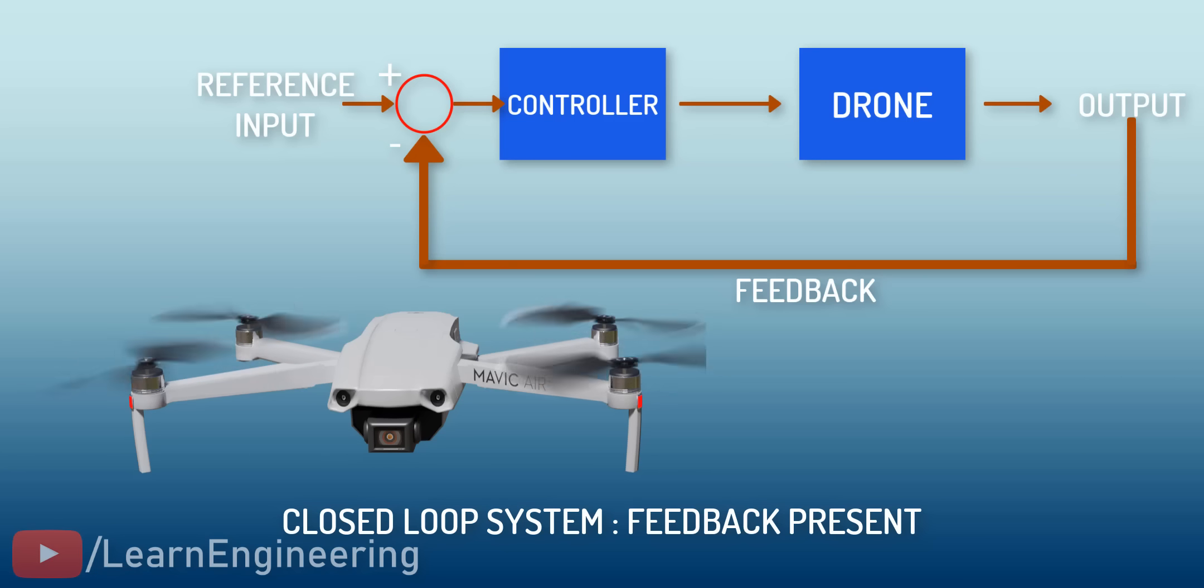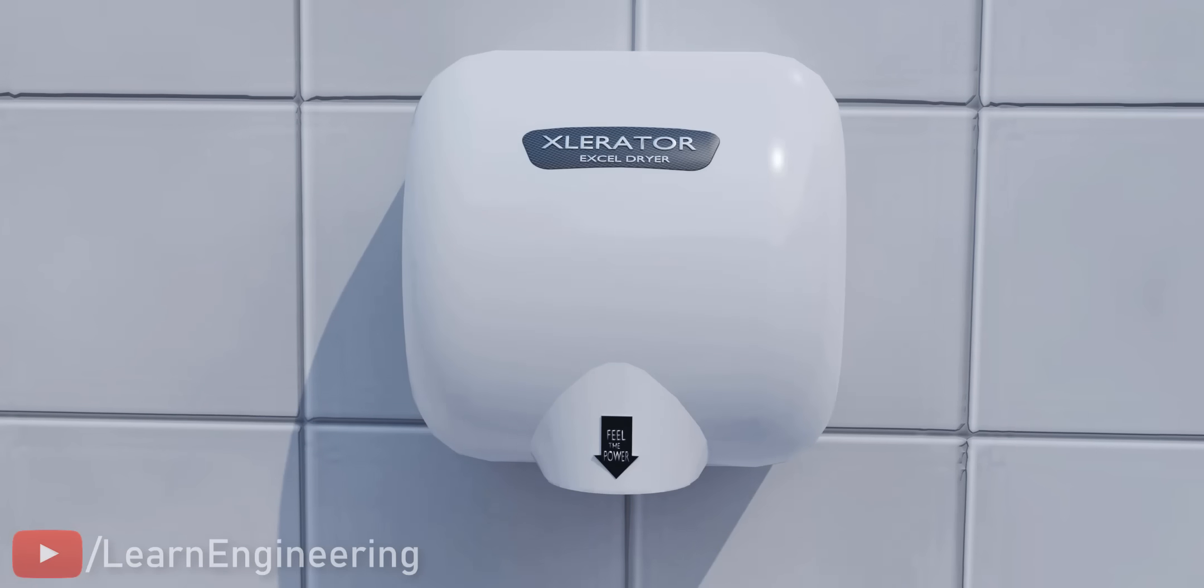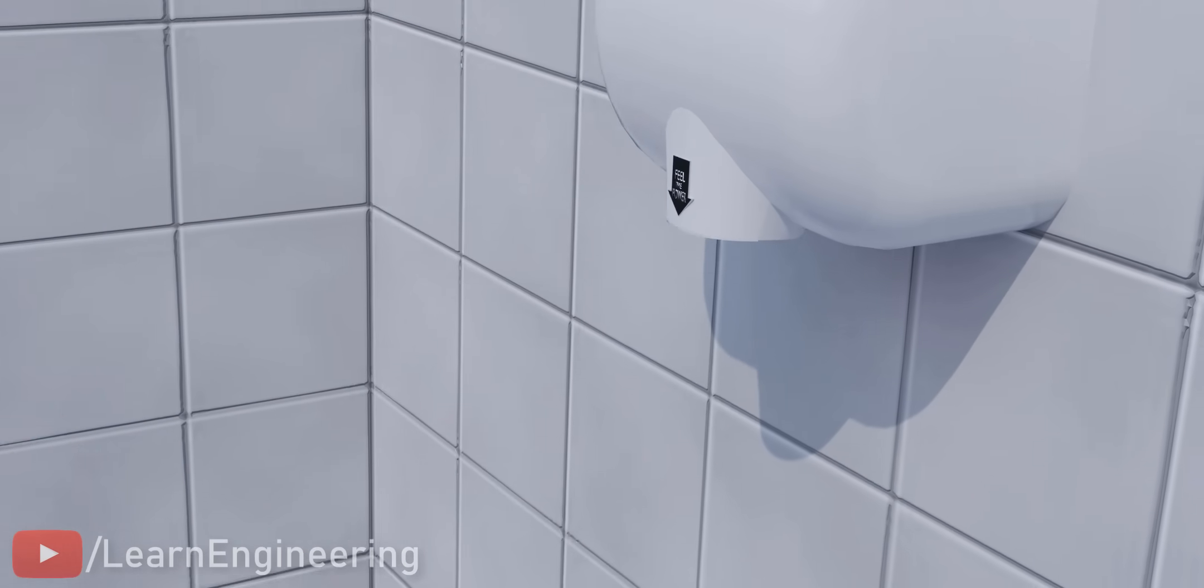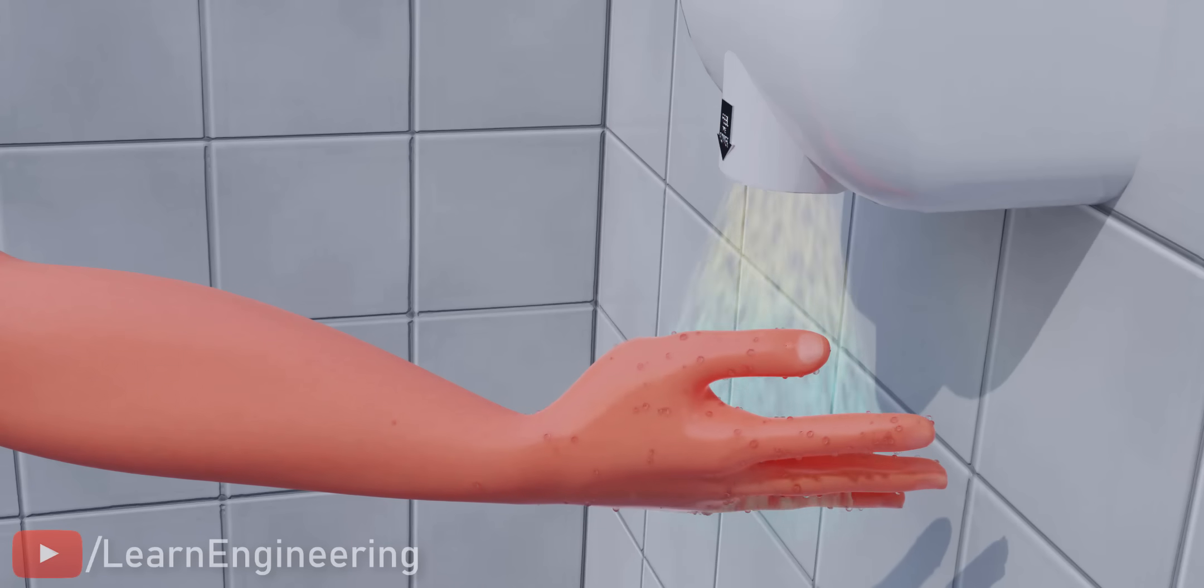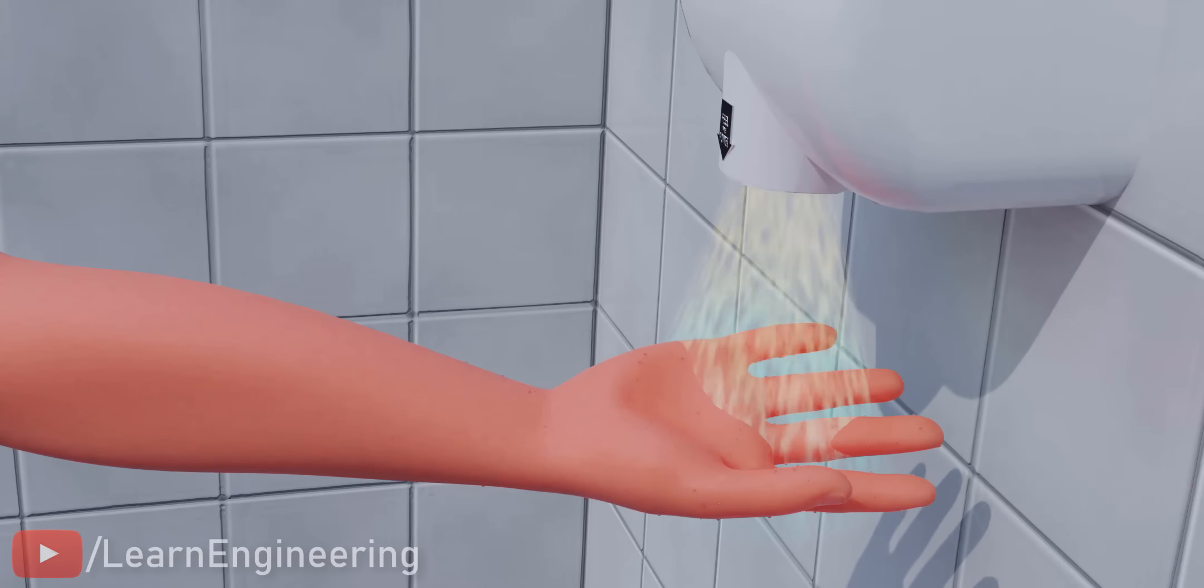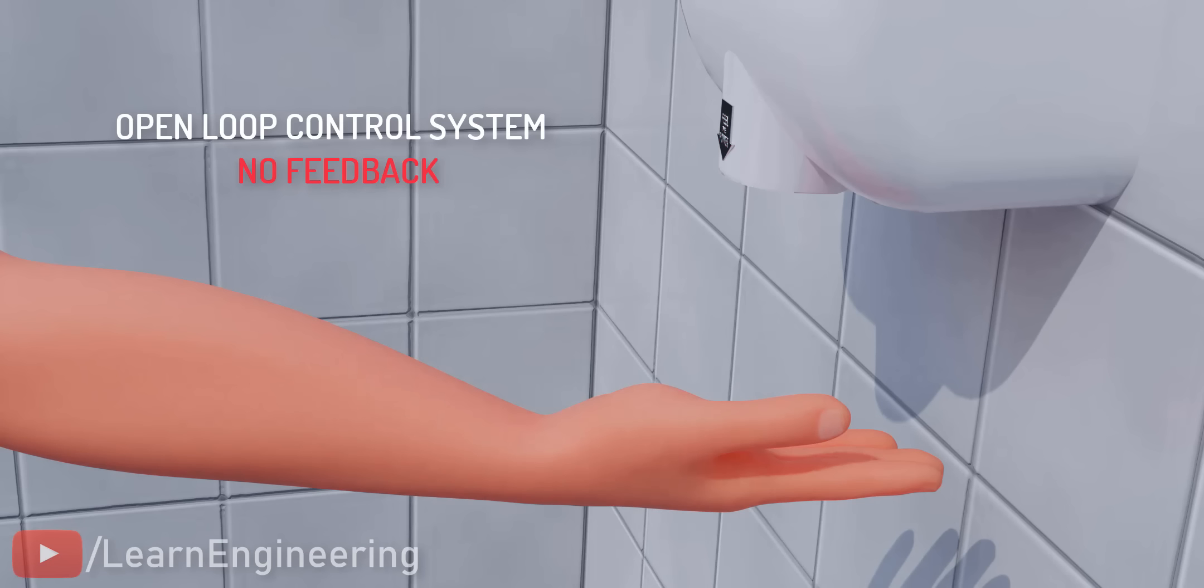Similarly, an open-loop control system also exists in which feedback is not present. Think of how an electric hand dryer blows out hot air when it detects that your hand is present. It stays on for a set duration of time, regardless of how dry your hand is. It gives no feedback about the dryness and makes no adjustments at all to make sure your hand is optimally dry.